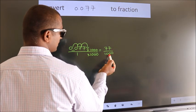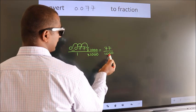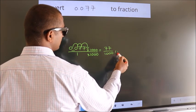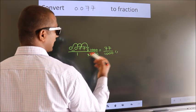This cannot be simplified any further. So this is our fraction: 77 over 1000.